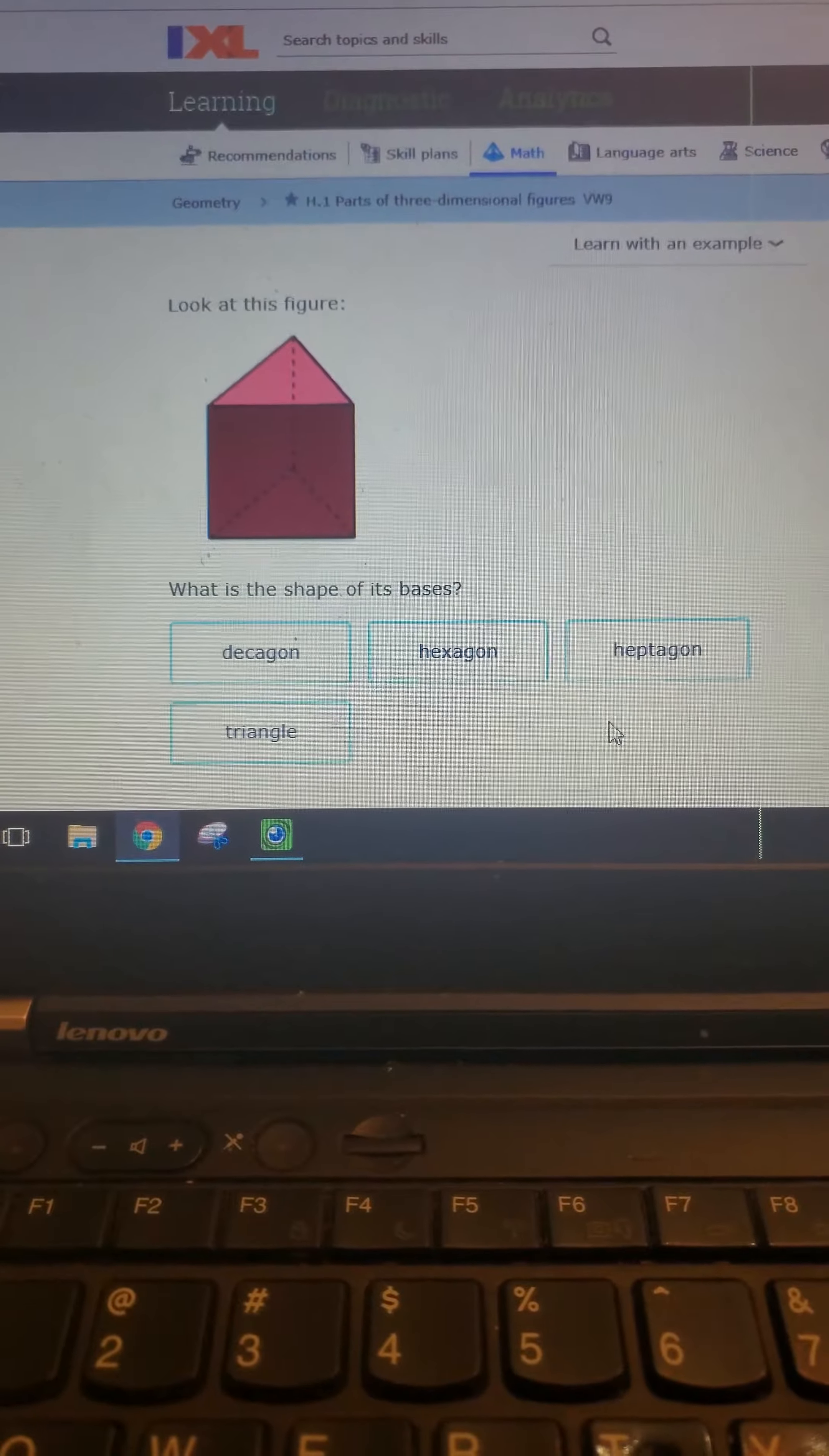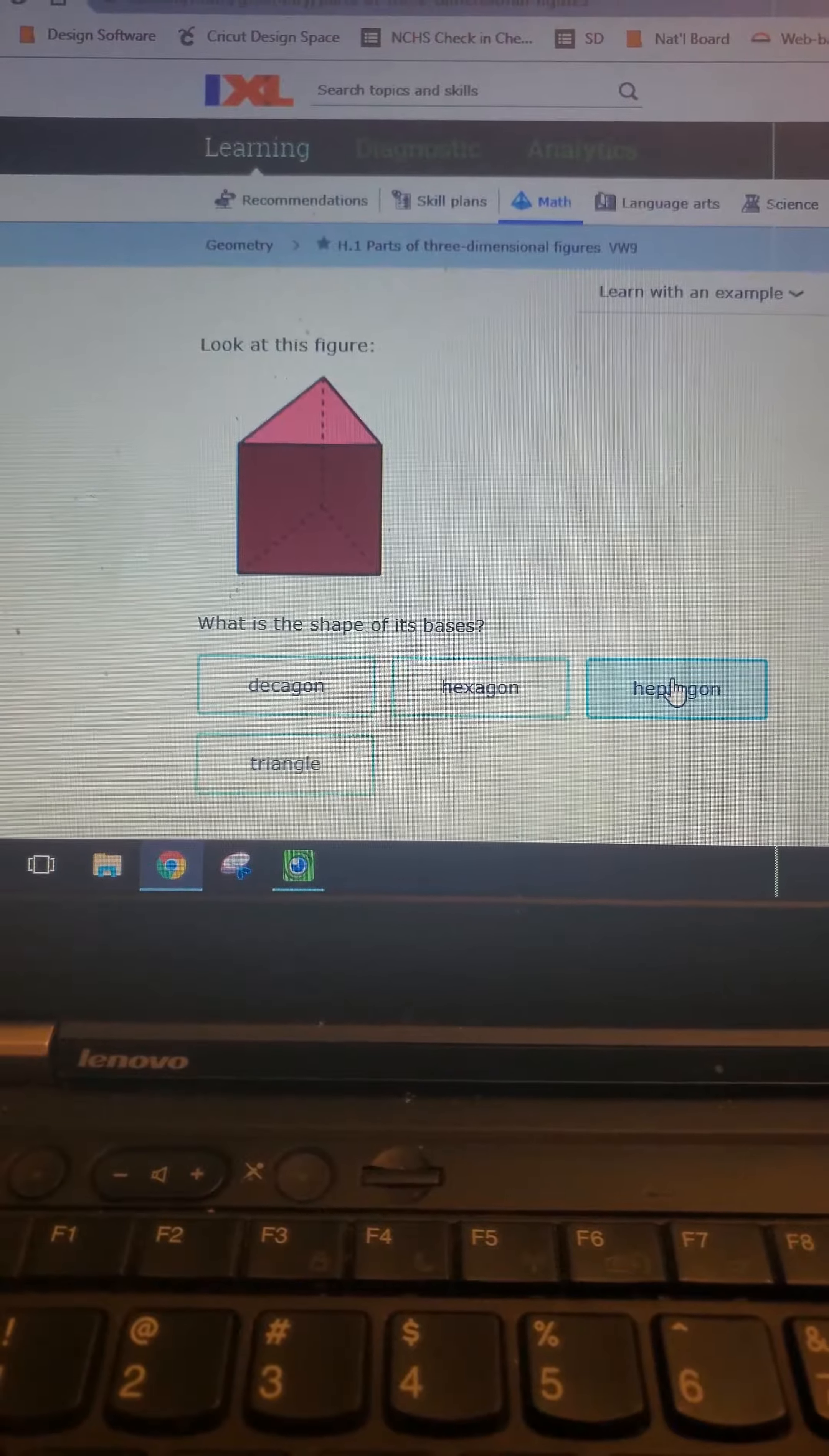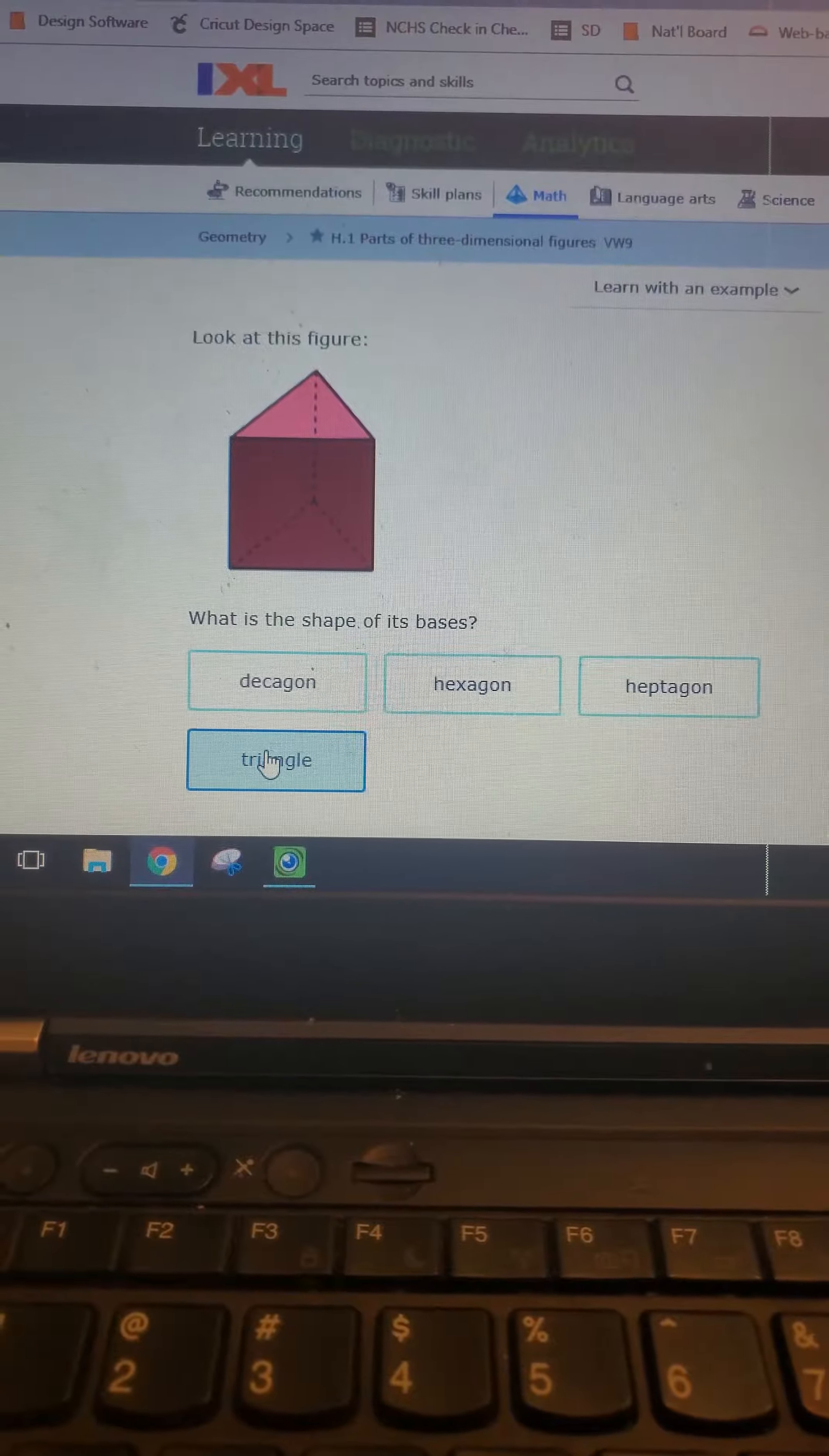And if we look at our choices, these are going to be pretty obvious. We don't have any decagons in this figure. We don't have any hexagons, and we don't have any heptagons. We have rectangles and then the base, which is a triangle. So it's pretty obvious that our answer is a triangle.